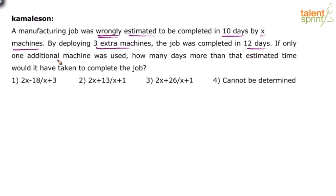If only one additional machine was used — remember they actually used 3 extra machines — but the question now says if only one additional machine was used instead of 3, how many days more than the estimated time would it have taken to complete the job? If only one extra machine was used, how many more days would it take to complete this job?